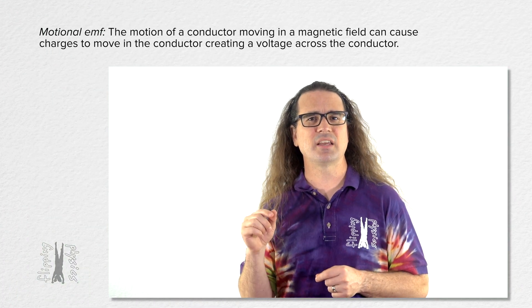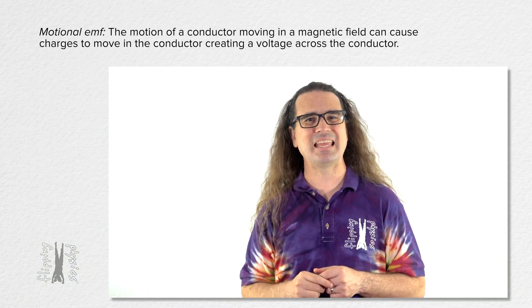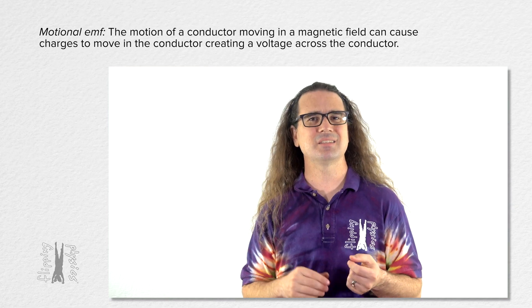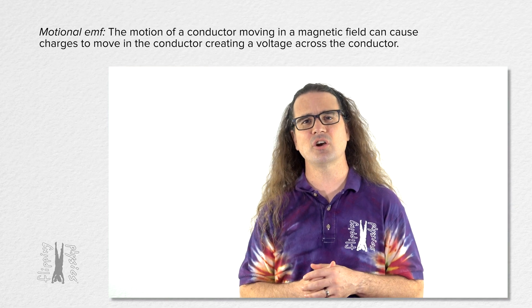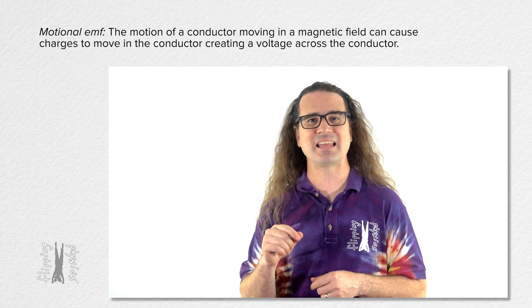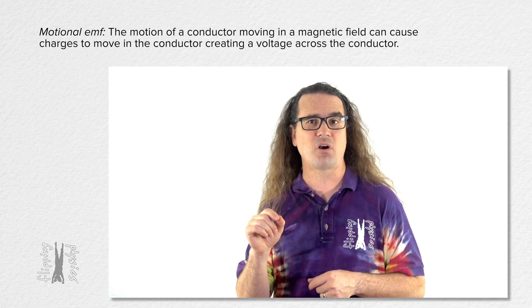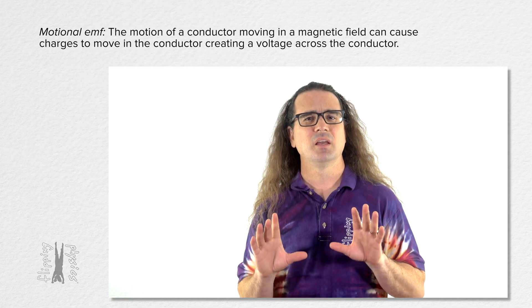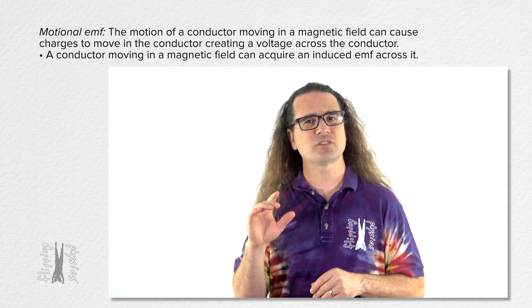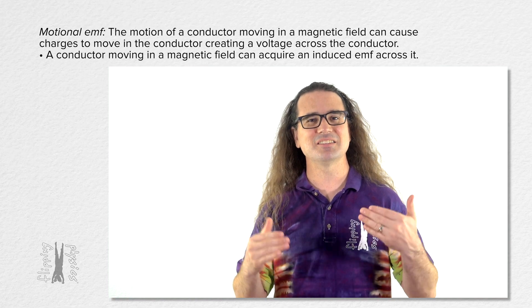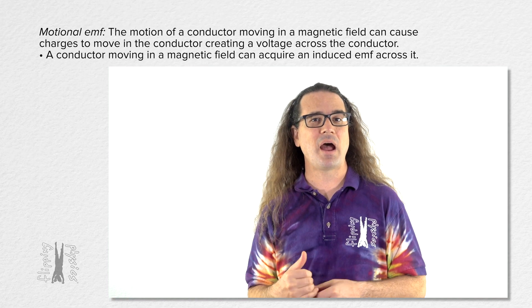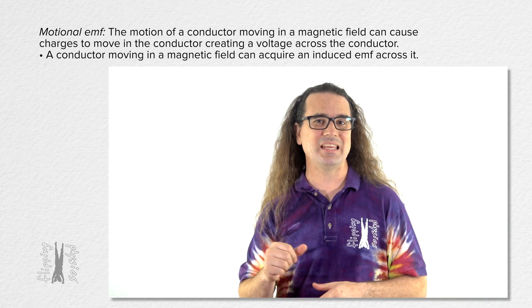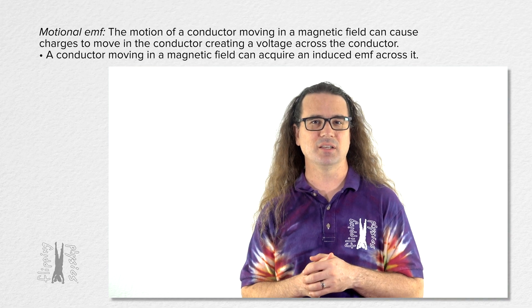Motional EMF is the idea that the motion of a conductor moving in a magnetic field can cause charges to move in the conductor, creating a voltage across the conductor. In other words, a conductor moving in a magnetic field can acquire an induced EMF across it.